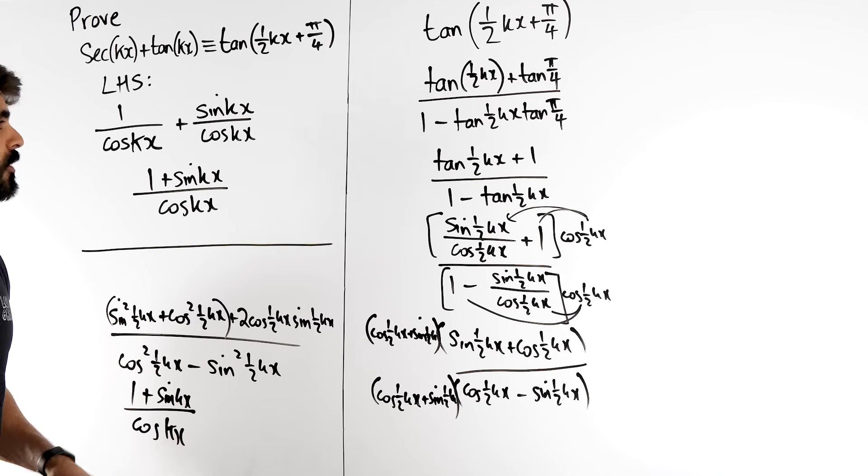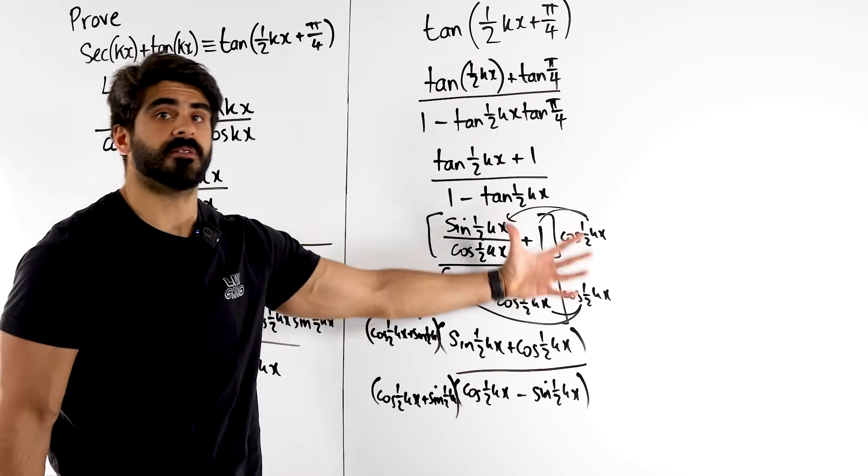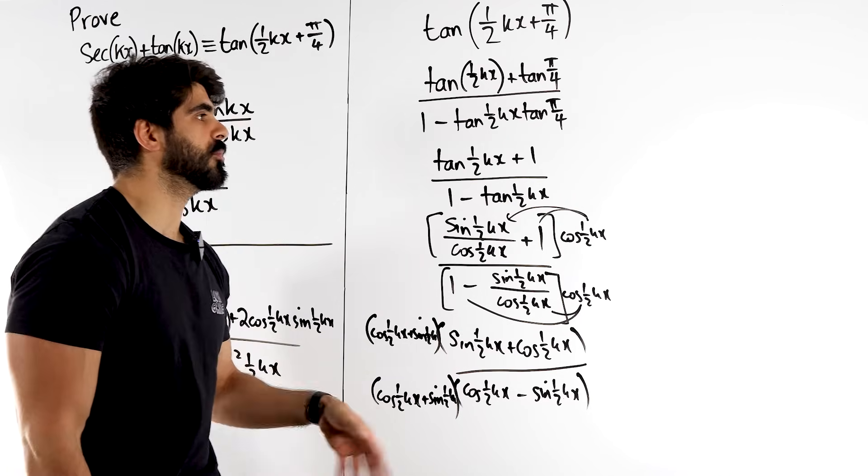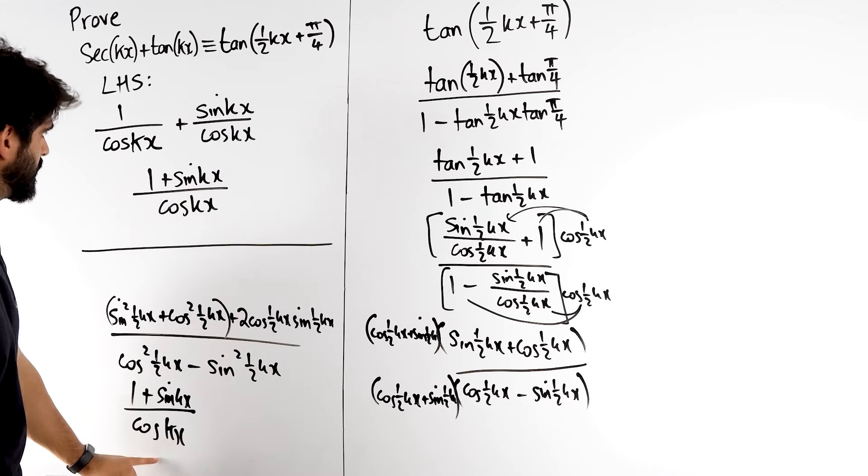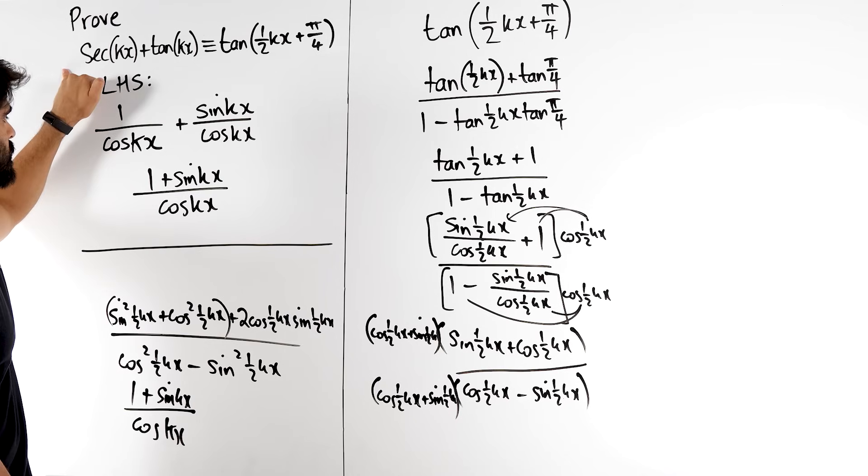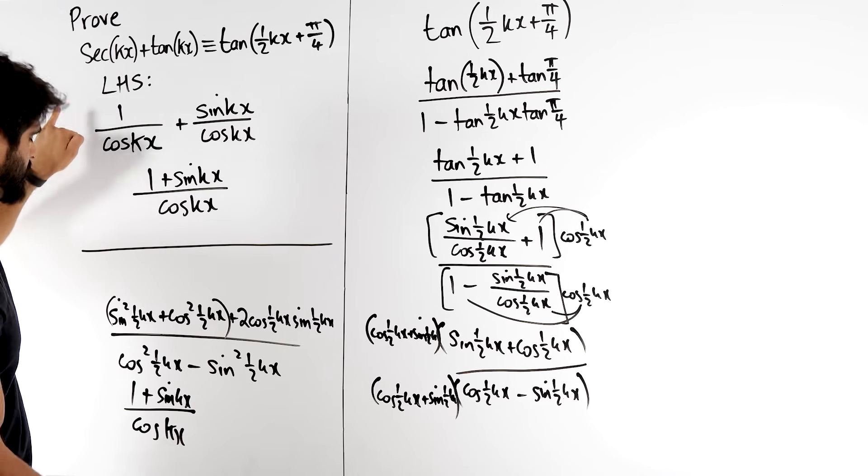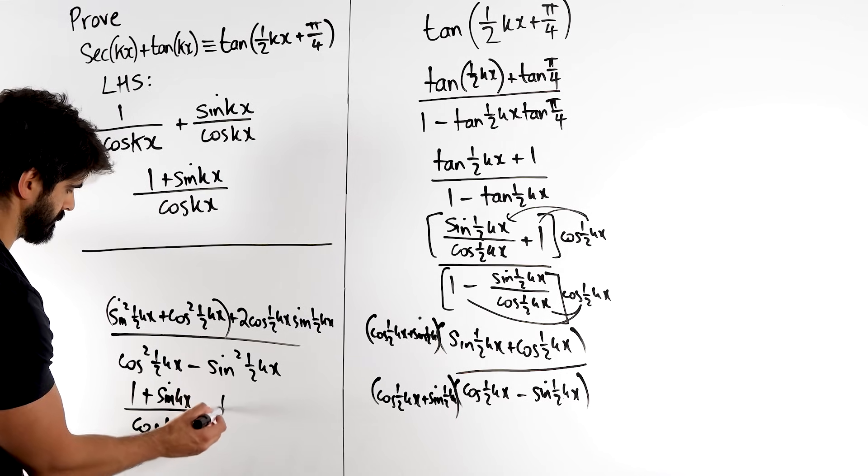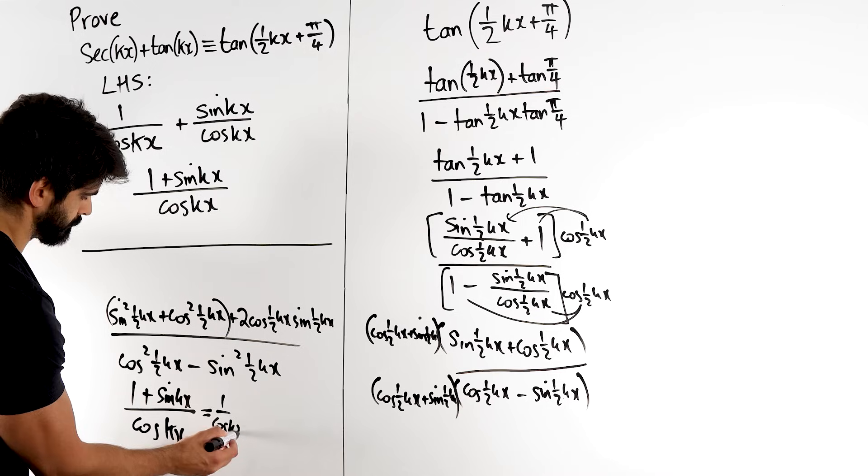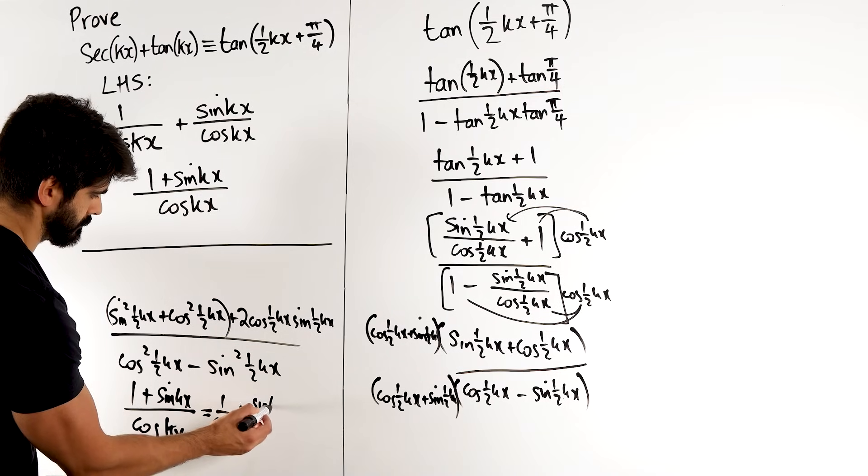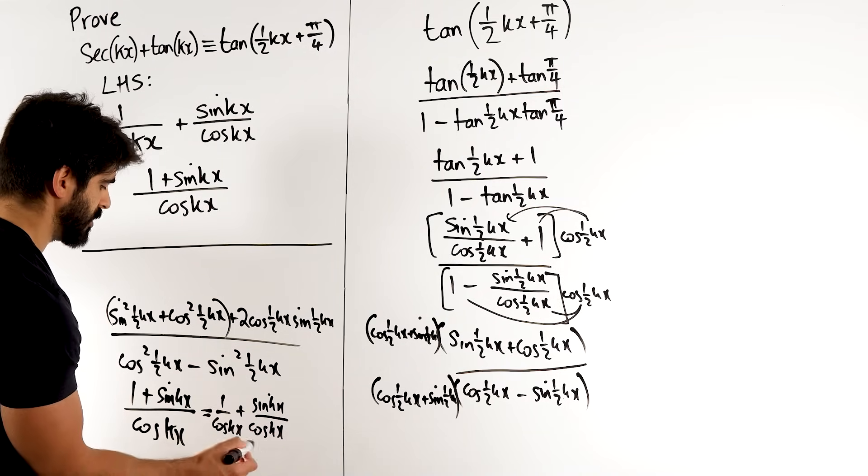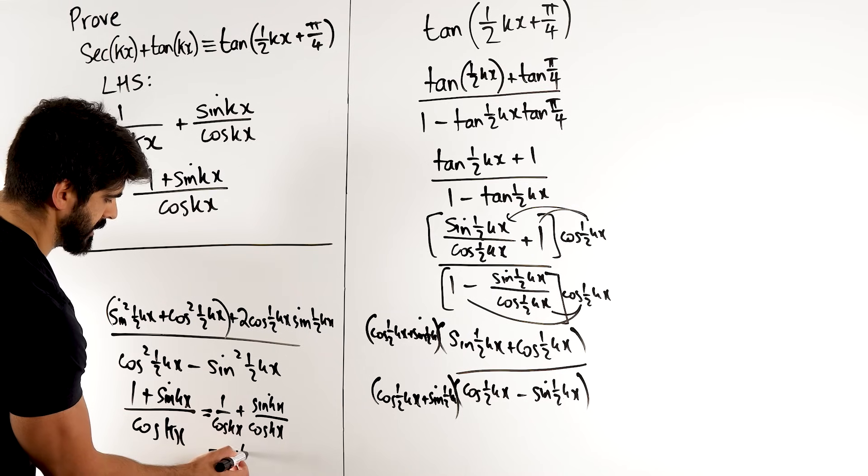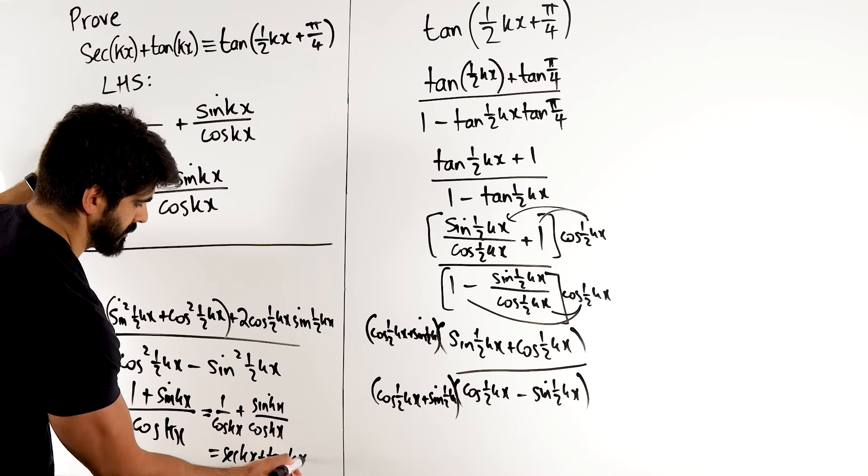Now it would be at this point where I realised actually this is the side we needed to manipulate, so I wouldn't be writing in pencil anymore, it would be this that I actually get rid of. Because from here, I'm just going to copy backwards to this. So this is the same as this, which is then sec(kx) + tan(kx). And that's proved.